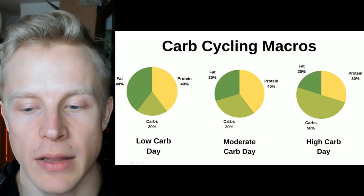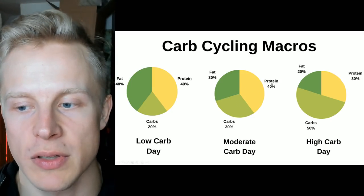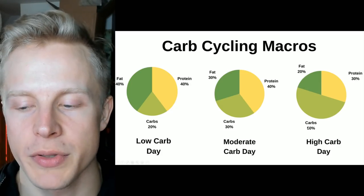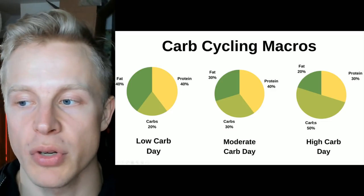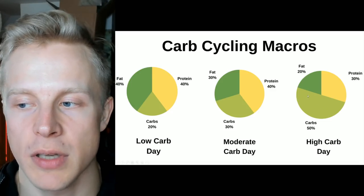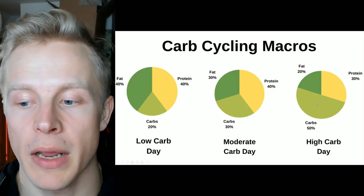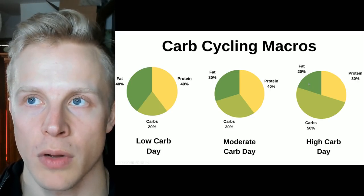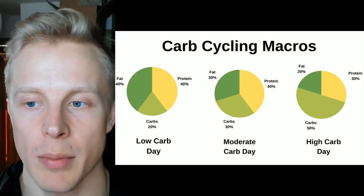On a moderate carb day, that's anything from 30 to 40 percent of calories from carbs, with the rest of the macros the same. On a high carb day, you reduce fat and increase carbs — carbs can be anywhere from 50 to 60 percent of calories. You can reduce protein slightly, since carbs are somewhat protein-sparing. On a high carb day, I like to keep fats semi-low, because combining high carbs and high fat together leads to overeating calories, which is bad for body composition.